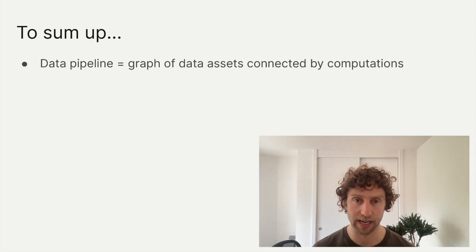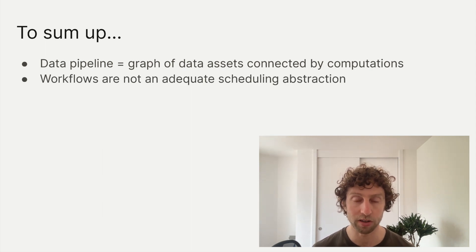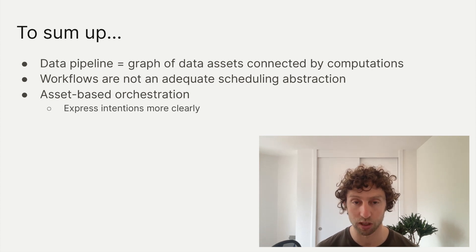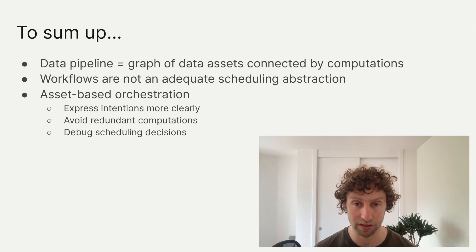Let's sum up. First, data pipelines are graphs of data assets — like files, tables, and ML models — connected by computations. Those computations need to be scheduled, but workflows are not an adequate scheduling abstraction. Asset-based orchestration conceives scheduling in terms of keeping assets up to date, which allows expressing intentions more clearly, avoiding redundant computations, and understanding and debugging scheduling decisions. If you're curious about Dagster, you can check us out on GitHub by googling Dagster GitHub, and we'd love to see you in our Slack, accessible from our website dagster.io. Thank you.